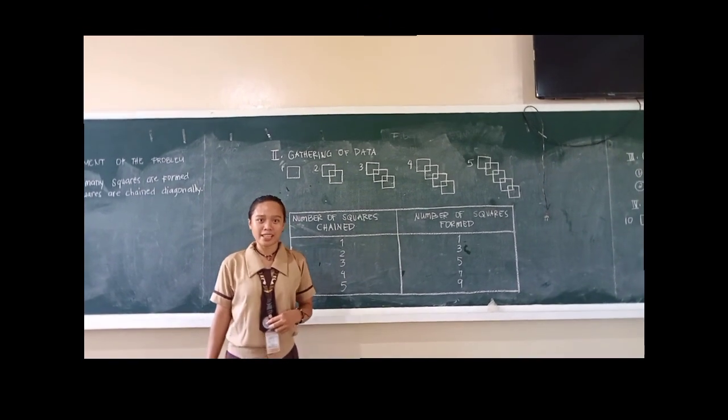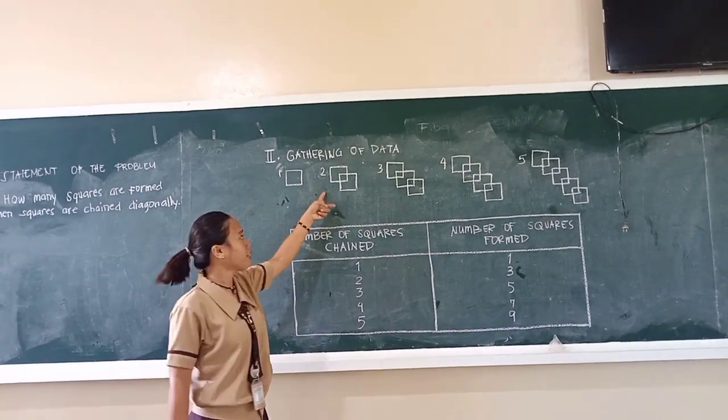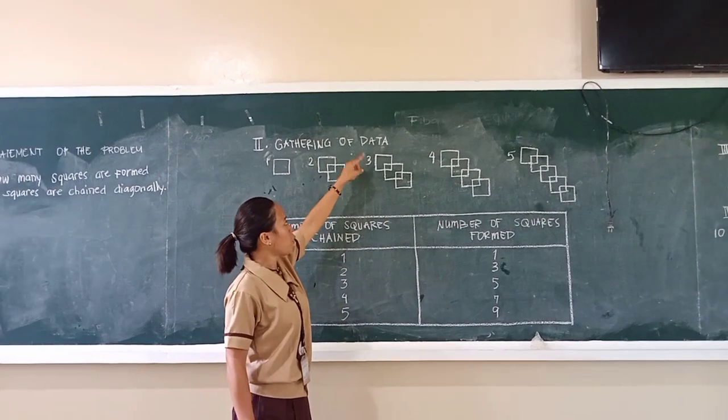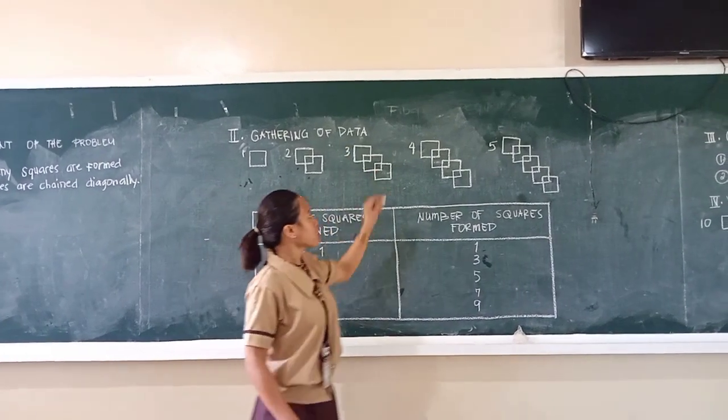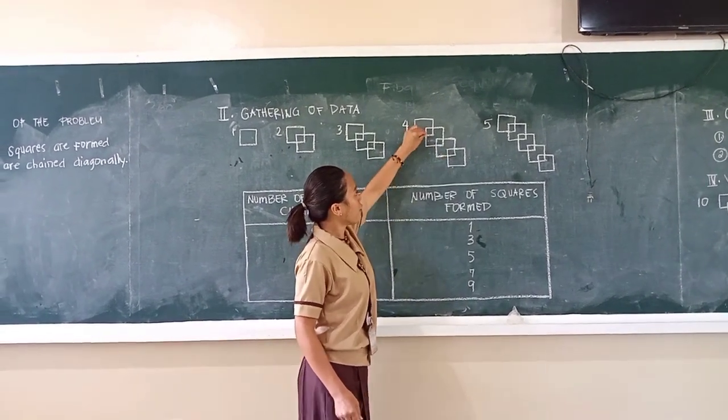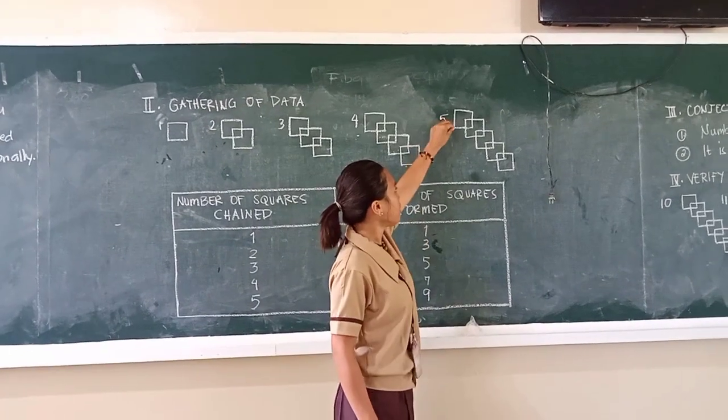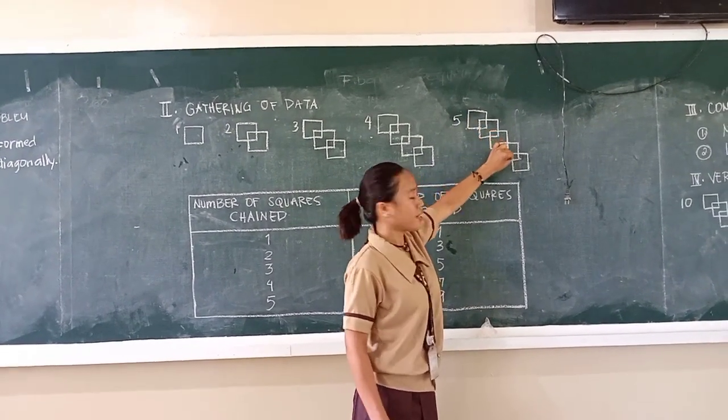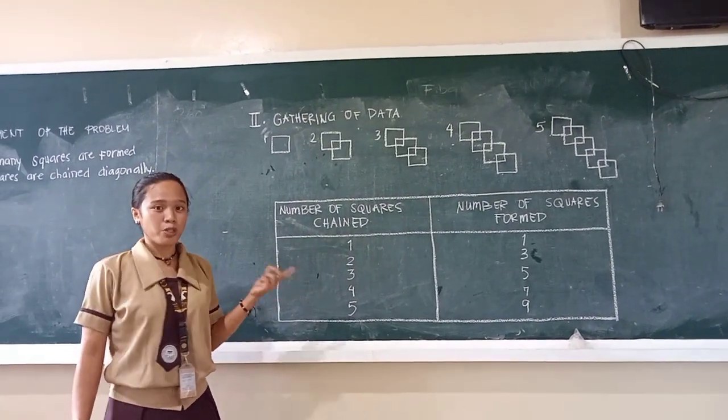This is how we gather data. When one square, it forms one square only. When two squares are chained, it forms three squares. When three squares are chained, it forms five squares. When four squares are chained, it forms seven squares. When five squares are chained, it forms nine squares. So we summarize the data using a table.